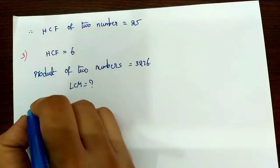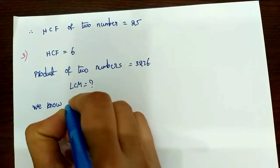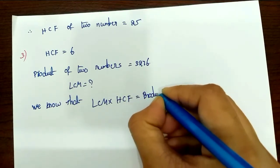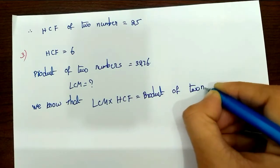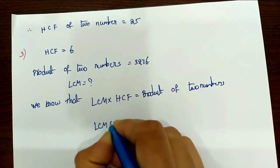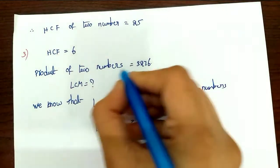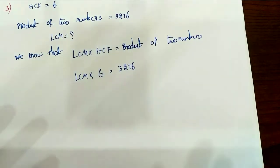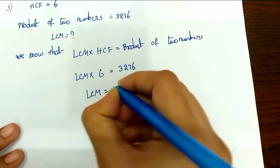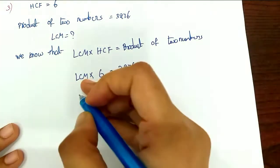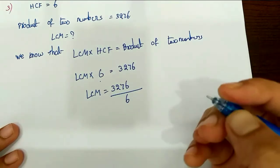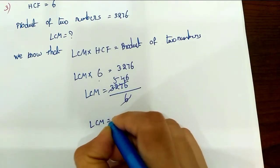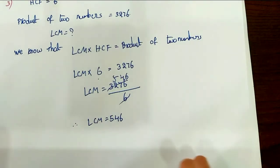We need to find the LCM. The formula is: LCM into HCF equals the product of two numbers. Here we find the LCM. HCF is 6, and the product of two numbers is 3276. So LCM equals 3276 divided by 6, which cancels to give LCM equals 546.